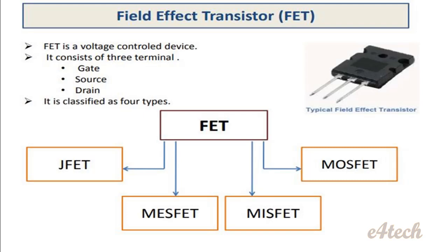BJT has mainly two disadvantages: low input impedance and it has considerable noise levels — we call it the noise effect.